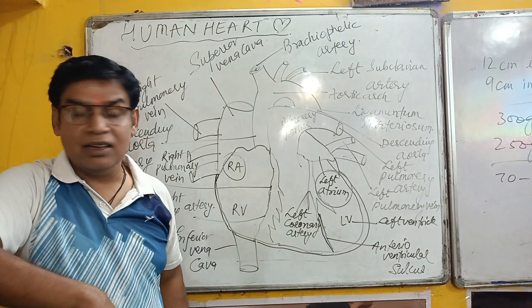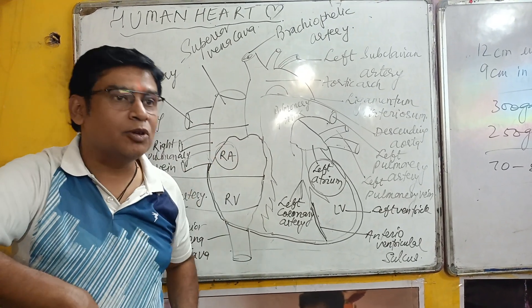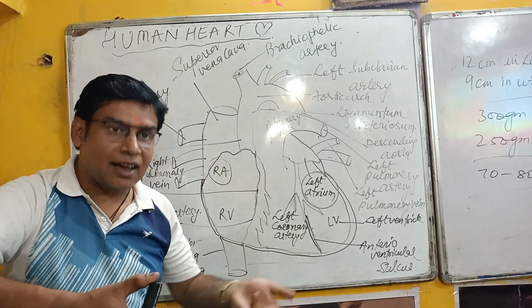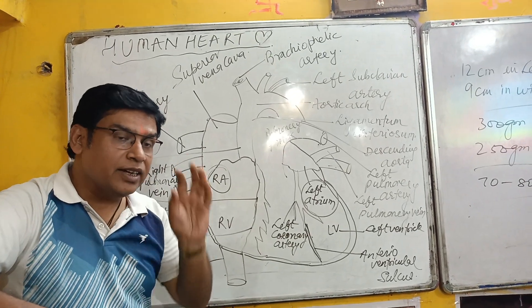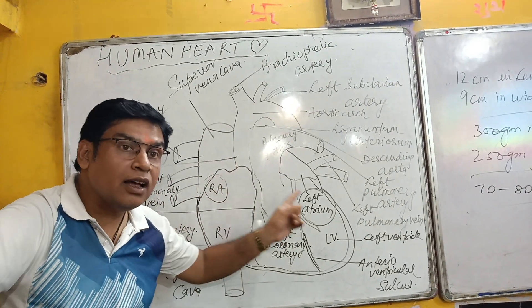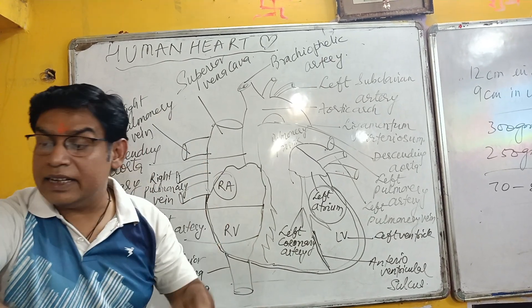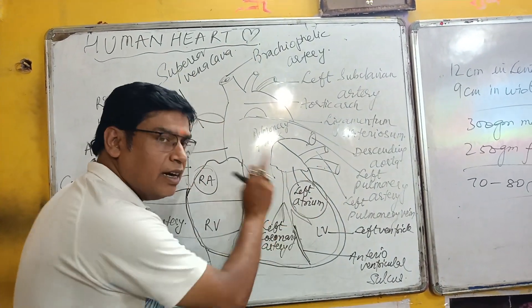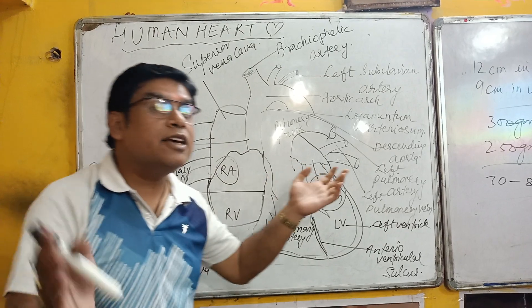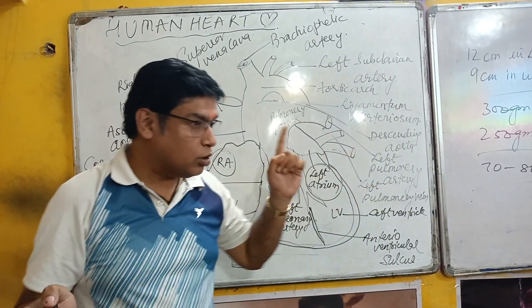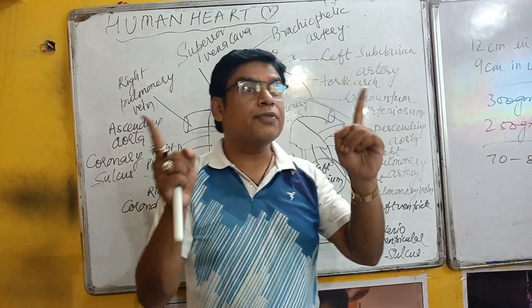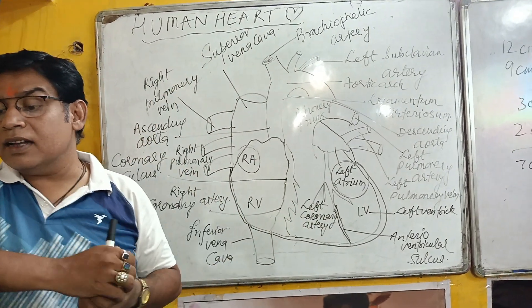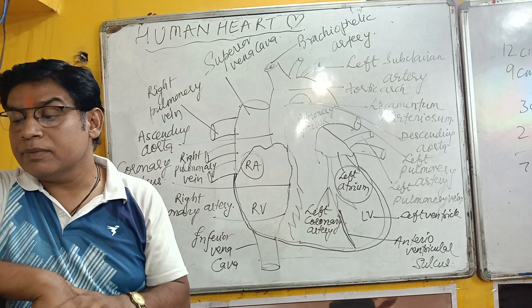In every atrium there is an appendage found over the auricle. The right and left auricles receive blood from different parts of the body.